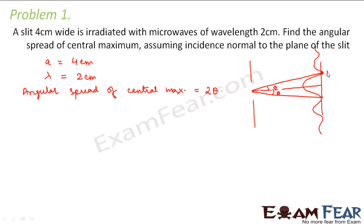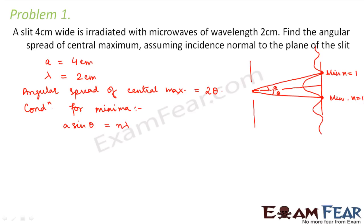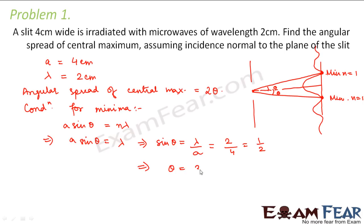This point is the secondary minima — this point is also minima. So what is the condition for minima? The condition for minima is a sin theta = n lambda. For this point, n = 1. So we get a sin theta = lambda, or sin theta = lambda / a = 2 / 4 = 1/2. This gives theta = 30 degrees. Therefore, the angular spread, which is equal to 2 theta, is equal to 2 × 30 degrees = 60 degrees.